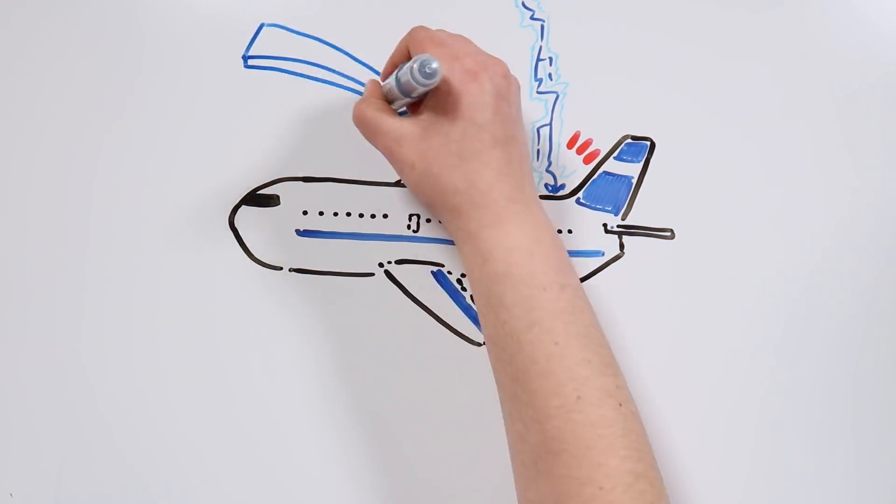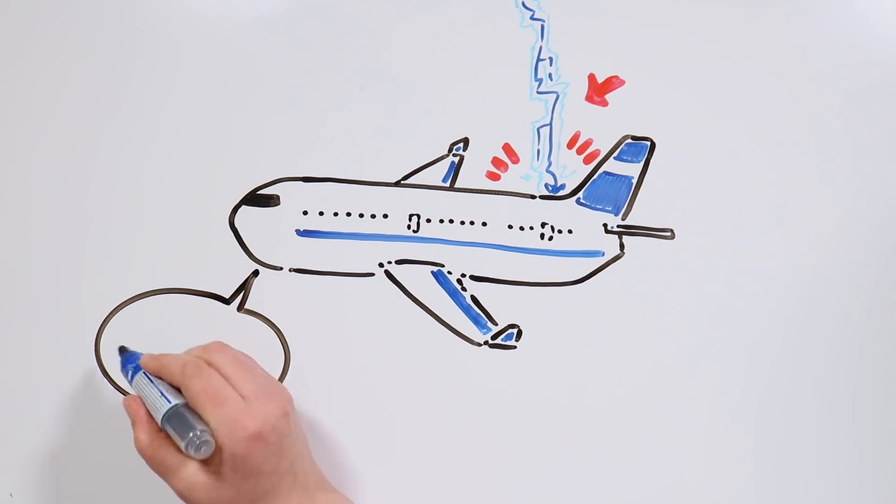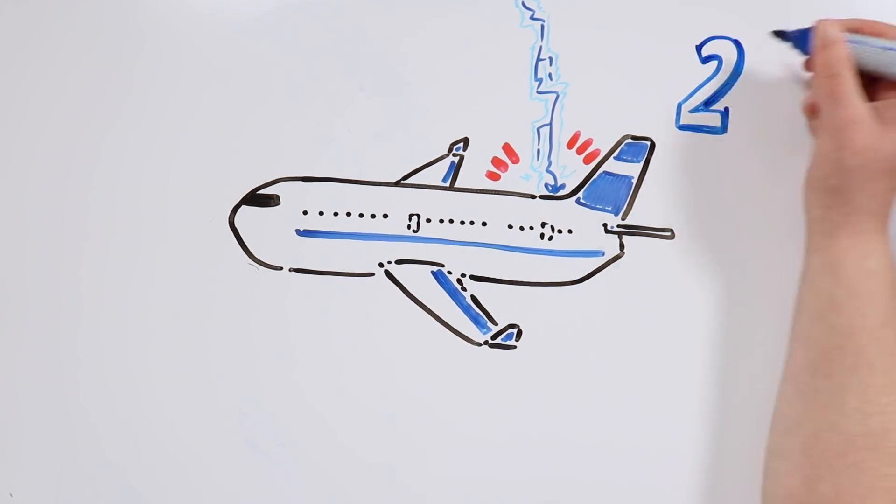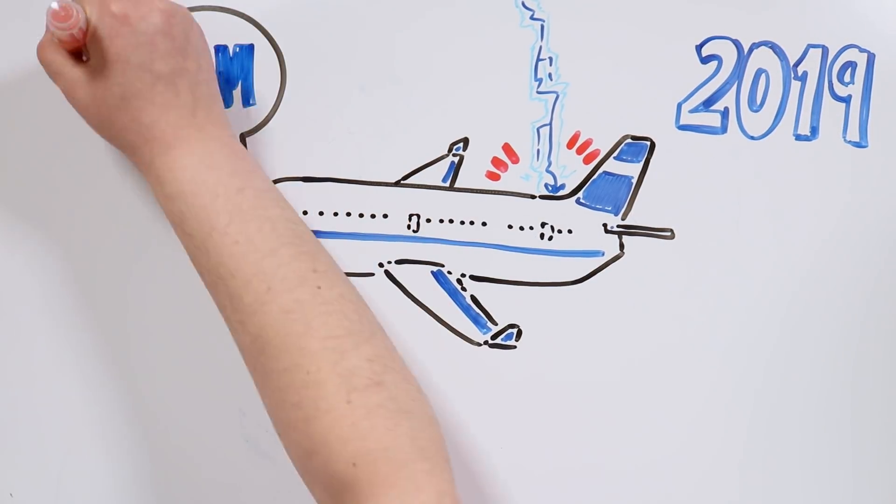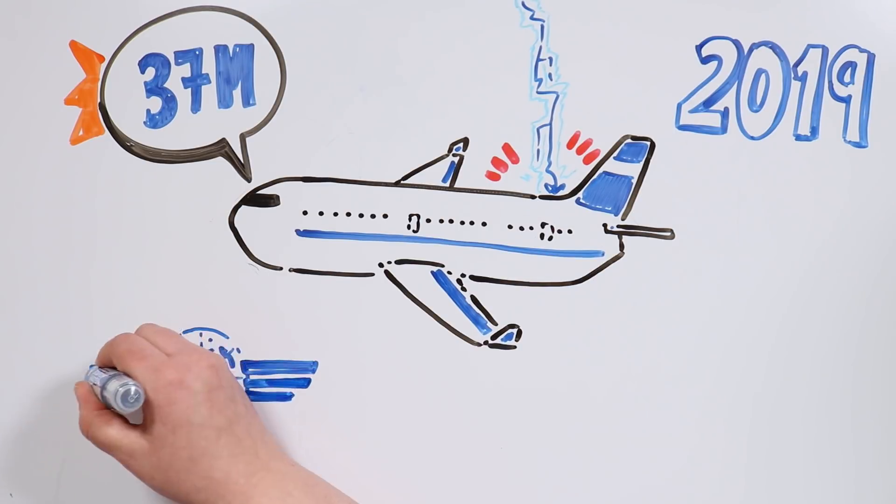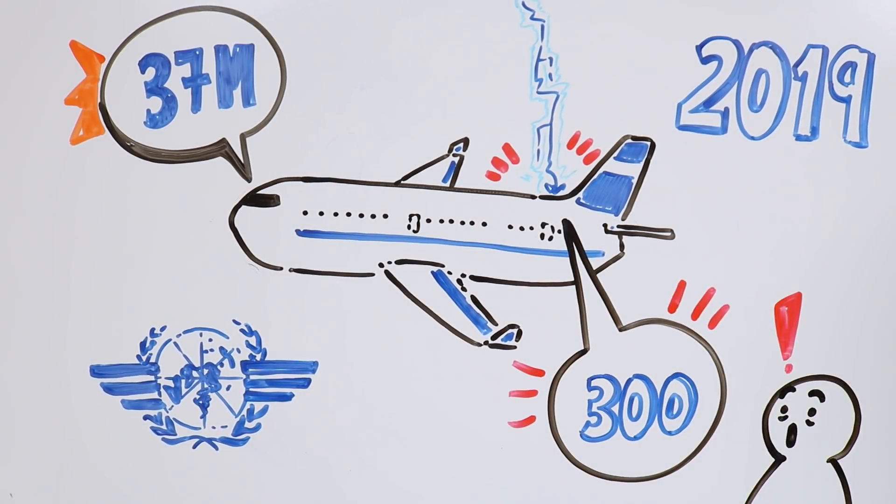You could think that this happens very few times during the lifespan of an airplane, but that isn't so. It is calculated that, on average, a commercial airplane will be struck by lightning every 1000 hours of flight. And knowing that in 2019 there were more than 37 million flights in the world according to the International Civil Aviation Organization, it can be estimated that around 300 airplanes will be struck by lightning every day!